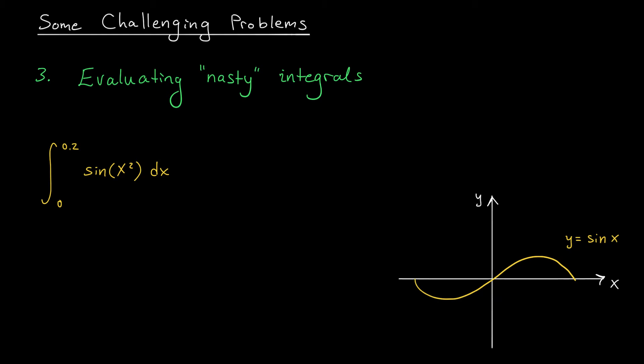To see this, consider the function y equals sine x, which I've graphed for you over here on the right. If you compute the tangent line of that function at x equals 0, the linear approximation, you should get the line y equals x, which looks something like this. Notice that near the origin, these two curves are very close together. It means that if x is small, x and sine x are approximately equal.